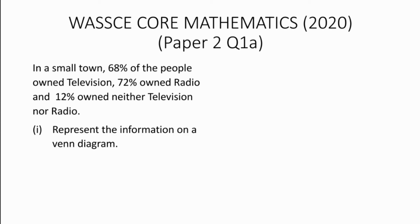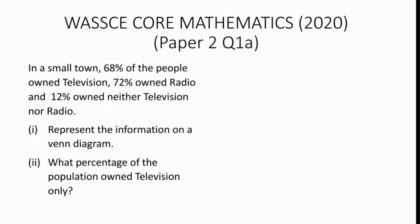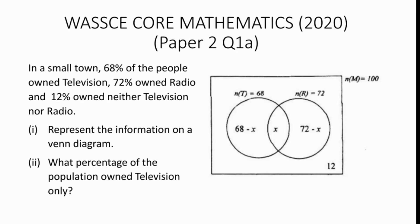We're asked what percentage of the population owned television only. First, let us represent the information on a Venn diagram. We will draw our Venn diagram very nicely and indicate the information correctly as shown here.